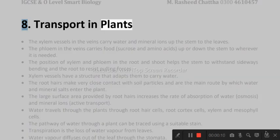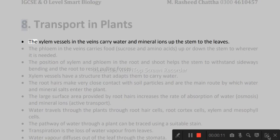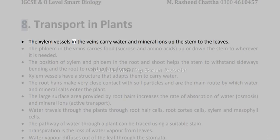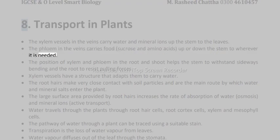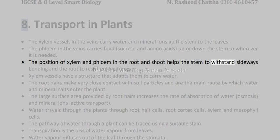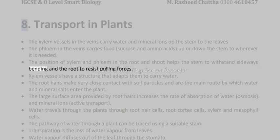Transport in Plants. The xylem vessels in the veins carry water and mineral ions up the stem to the leaves. The phloem in the veins carries food — sucrose and amino acids — up or down the stem to wherever it is needed. The position of xylem and phloem in the root and shoot helps the stem to withstand sideways bending and the root to resist pulling forces.